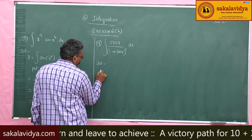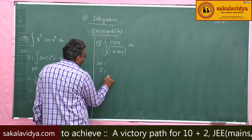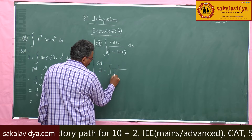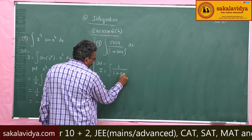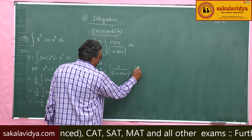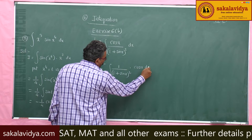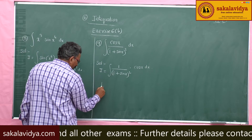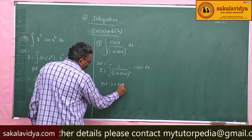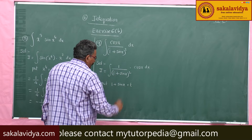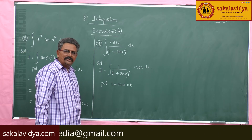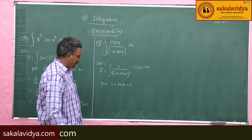Let I equal to integral of 1 by (1 plus sin x) whole square into cos x dx. Here, put 1 plus sin x equal to t. Differentiate both sides with respect to x.